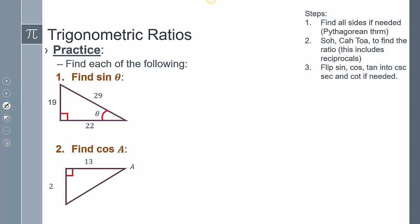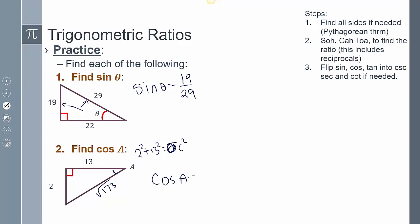Finding sine of theta: sine equals opposite over hypotenuse, so that's 19 over 29. For cosine of A, first find the hypotenuse using the Pythagorean theorem: A² + B² = C², giving C = √173. Then cosine of A is adjacent over hypotenuse. After rationalizing, cosine of A equals 13√173 over 173.